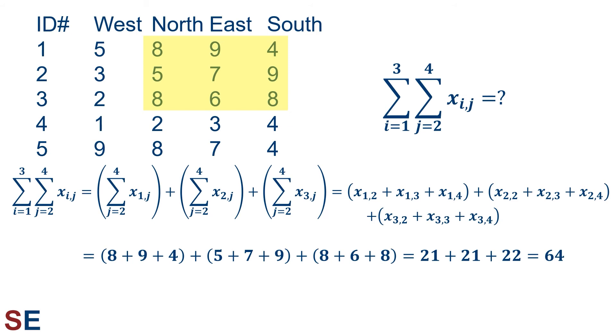And then looking those values up in the table, we get the first summation as 8 plus 9 plus 4. The second as 5 plus 7 plus 9. The third as 8 plus 6 plus 8. And that gives us 21 plus 21 plus 22 equals 64, which is the sum of all the values in that yellow box as represented by the double summation symbol.